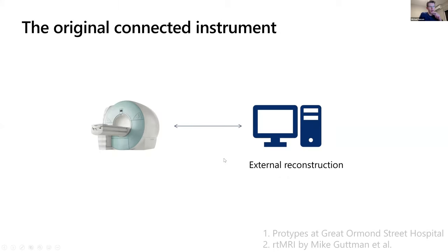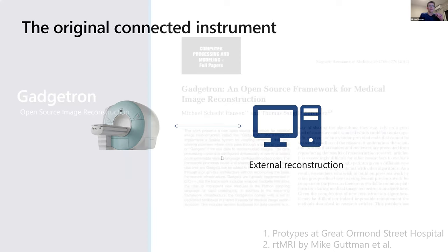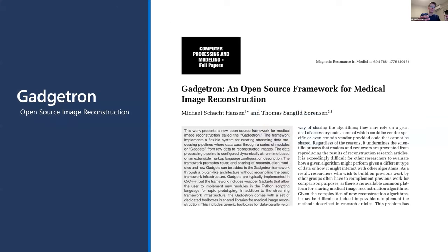I built some prototypes while at Great Ormond Street Hospital. There were efforts at the NIH — the RT MRI system by Mike Gottman — and several others. This is not an exhaustive list; there were many little efforts bubbling up along these lines. After a while, we put together something that was a sort of framework called the Gadgetron. It's still alive and well on GitHub, and I'd encourage you to participate in this project if you're interested.